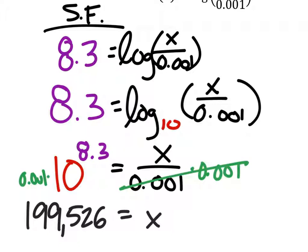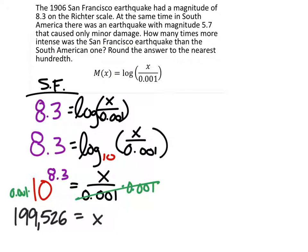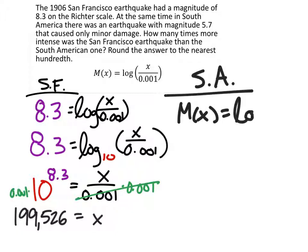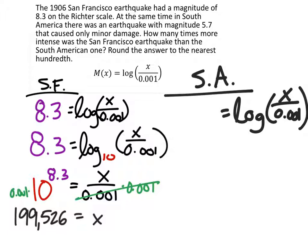Not only do we need the San Francisco seismograph reading, we also need that South American one. Let's look at the South American one. We want to find the seismograph reading, so we've got M of X equals log of X over 0.001. It gave us the Richter reading, so we're going to replace M of X with the reading it gave us: 5.7.